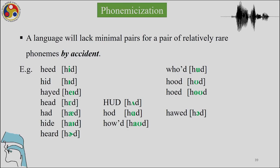Phonemicization is the body of knowledge and techniques used to work out the phonemic system of a language. The most effective method in phonemicization is to look for minimal pairs — two different words that differ in exactly one sound in exactly the same position. The absence of a minimal pair does not prove much, as there are also phonemes which lack minimal pairs. A language might lack minimal pairs for a few phonemes by accident, and in such cases we may have to use near-substitutes, as with the vowel paradigm where 'howd' and 'hood' are not exact minimal pairs.